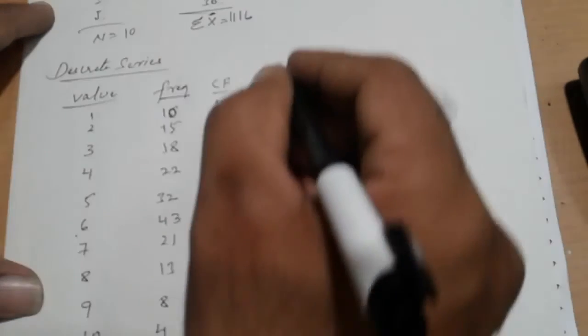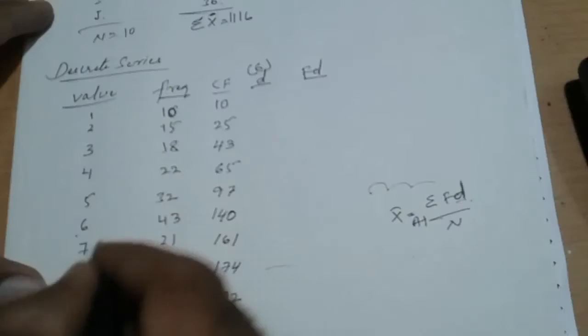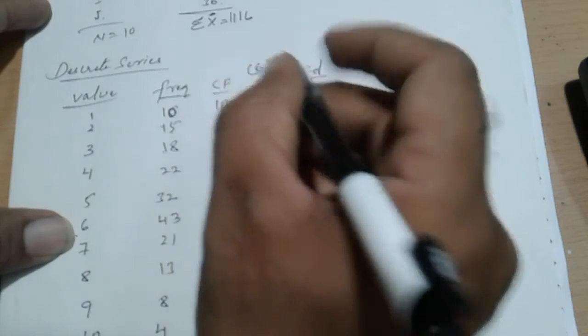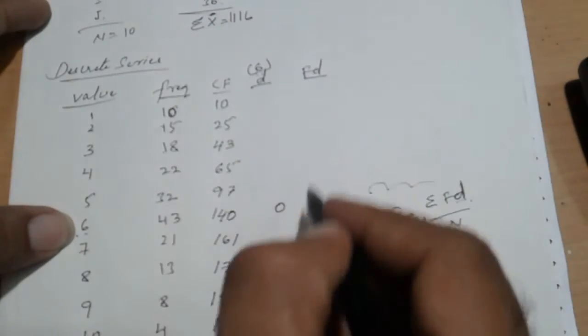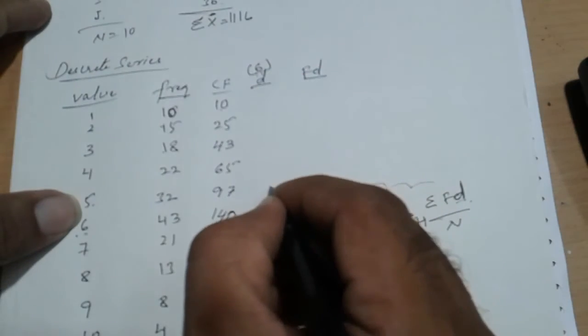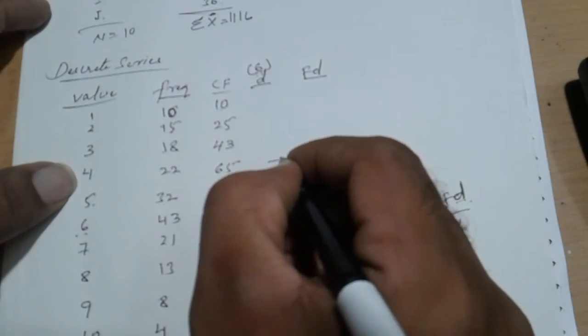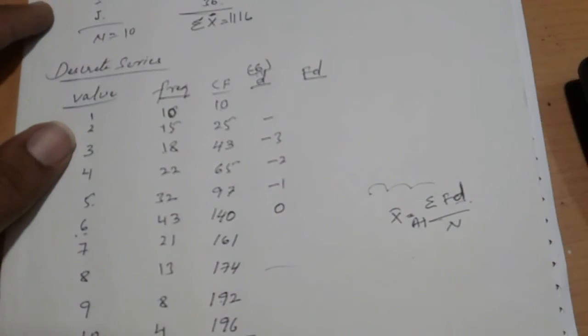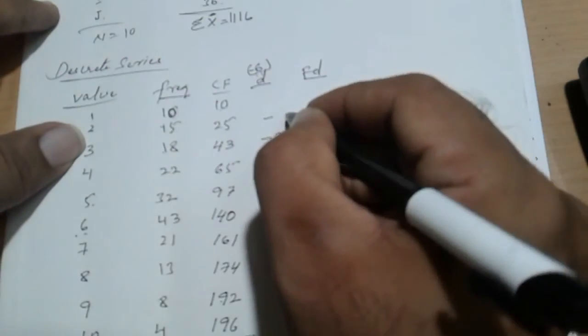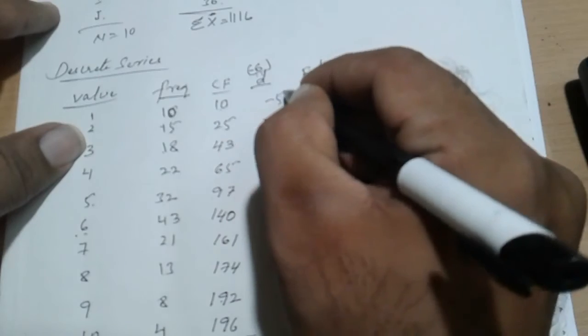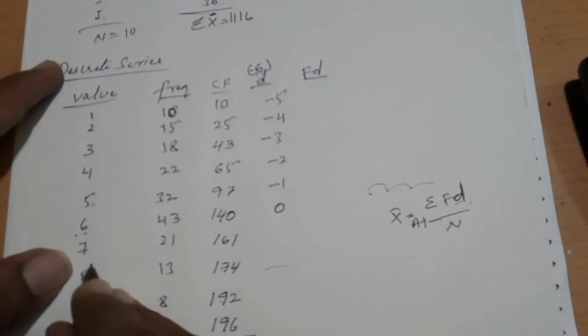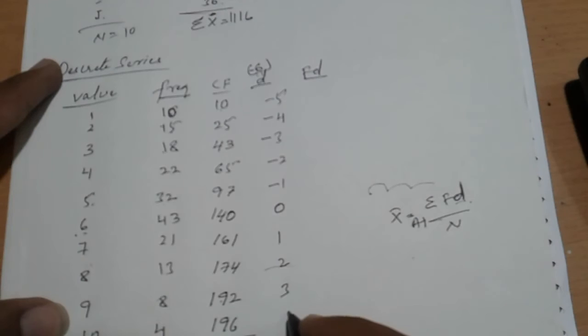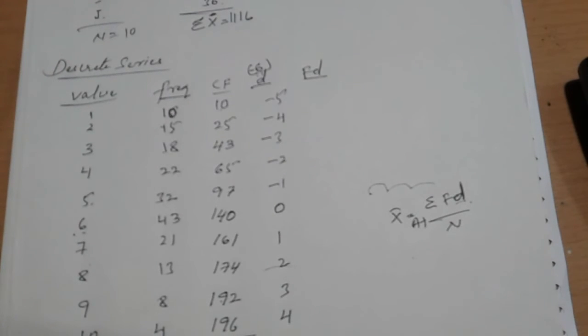So take 6 here. Directly we can take 0, because we have to minus d. 6 minus 6: 0. 5 minus 6: minus 1. 4 minus 6: minus 2. This is minus 3. 2 minus 6: minus 4. Minus 5. Now it's plus. 6 minus 6: plus 1. Plus 2. 8 minus 6: plus 2. 9 minus 6: plus 3. 10 minus 6: plus 4. This is the way how we get the values.